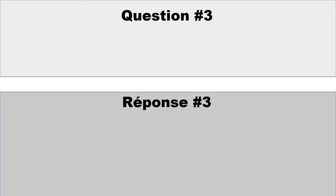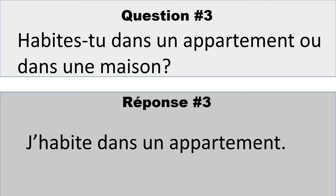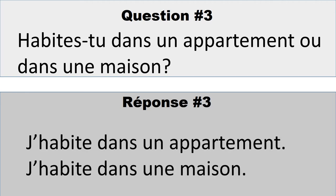Question number three: Habites-tu dans un appartement ou dans une maison? You already know «habites-tu». «Appartement» is apartment and «une maison» is a house. Your answer would be something like «oui, j'habite dans un appartement», or «j'habite dans une maison».